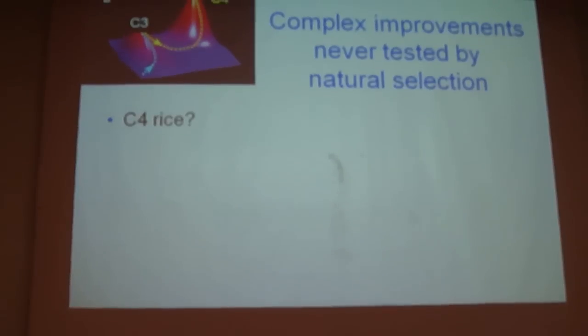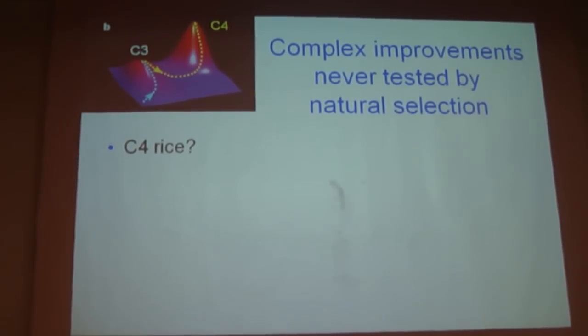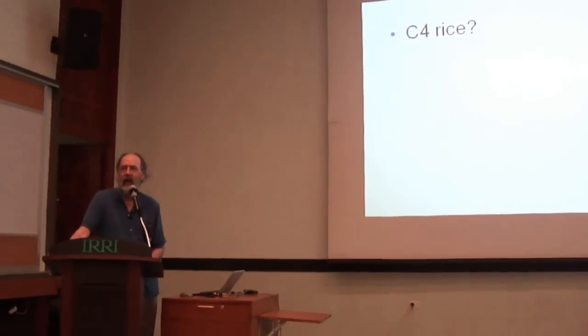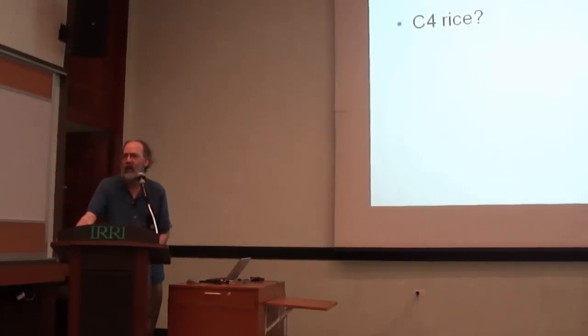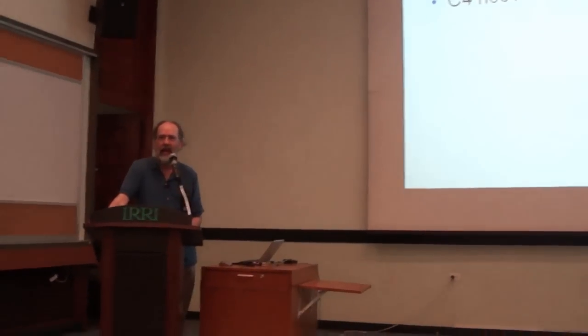So C4 rice is a possible example of that. We know that the C4 photosynthetic pathway has evolved many times — I thought it was 30-some, but apparently it's 60-some independent cases of C4 photosynthesis evolving. But if we look at the phylogenetic distribution of C4, we find a number of cases in the branch of the grasses that has corn and sorghum, but we don't find any in the branch of the grasses that has rice. So at least within rice's near relatives, it may be that evolving C4 photosynthesis isn't that easy.